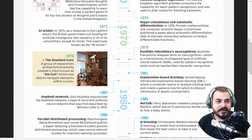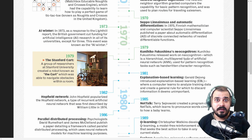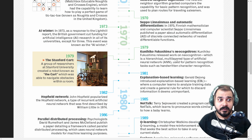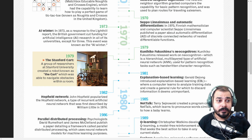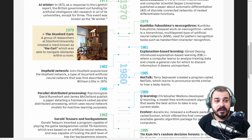Then there is Kunihiko Fukushima's work on the Neocognitron, which is a hierarchical multi-layered type of artificial neural network. From here, the multi-layer artificial neural network actually came into picture, used for pattern recognition such as handwritten character recognition.